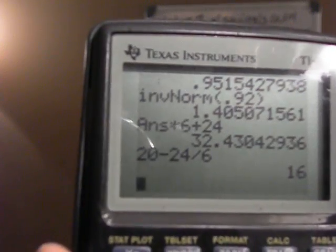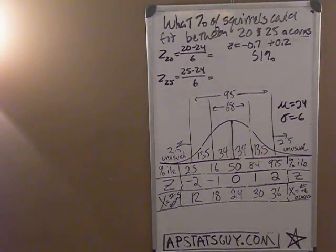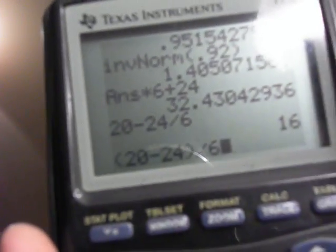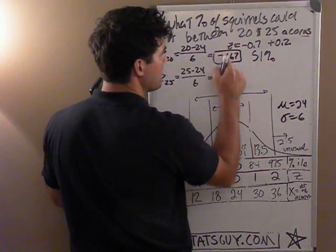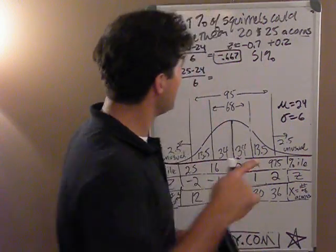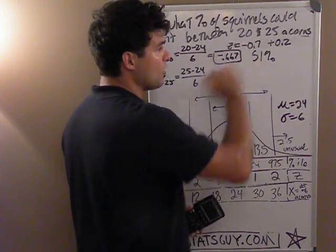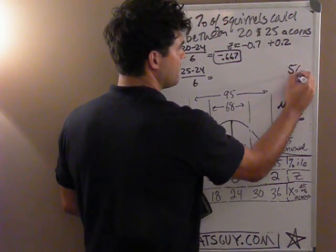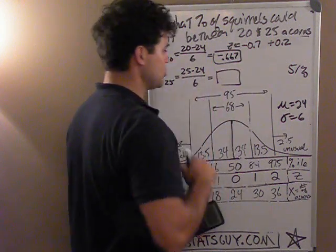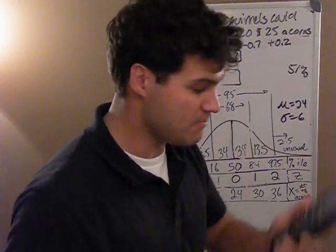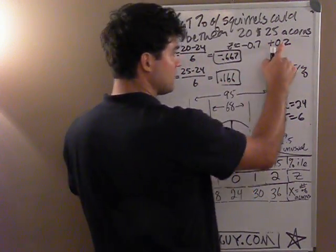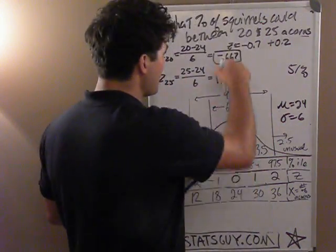Open parentheses, 20 minus 24, close parentheses, divided by 6. It gives you negative 0.6667, which is negative two-thirds, negative 0.667. Not bad - I guessed negative 0.7. Now let's find my z-score for 25. 25 minus 24 in parentheses divided by 6 is positive 0.166. That rounds up to 0.2, I'm close. So now I've got two z-scores.